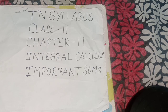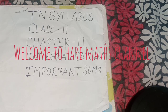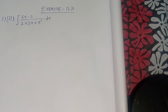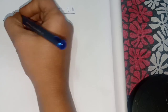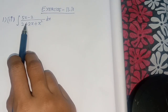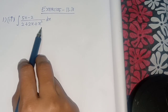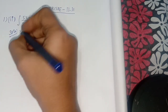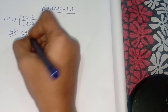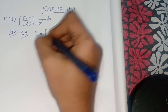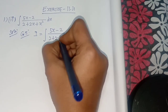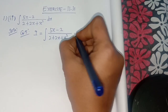Hello students, welcome to Harimax Tonality in syllabus class 11 chapter 11 integral calculus important sums. Exercise 11.11, first sum: find the integral of (5x minus 2) divided by (2 plus 2x plus x squared) dx. Solution: given that I equals the integral of (5x minus 2) divided by (x squared plus 2x plus 2) dx.